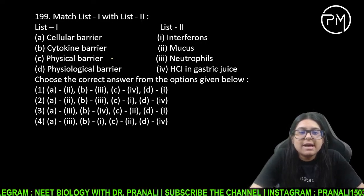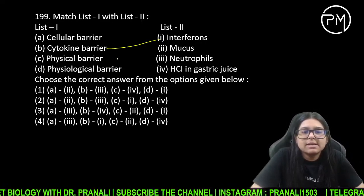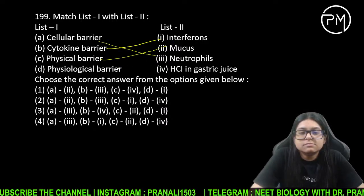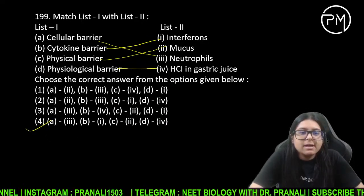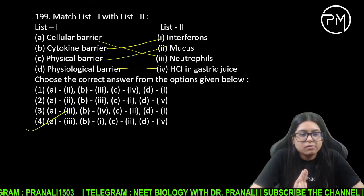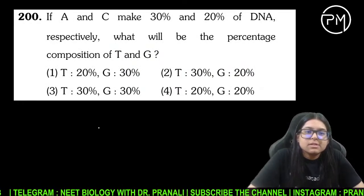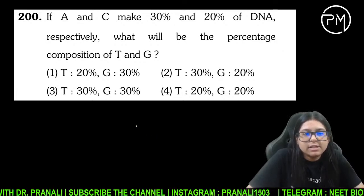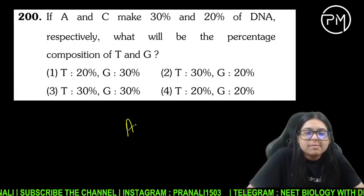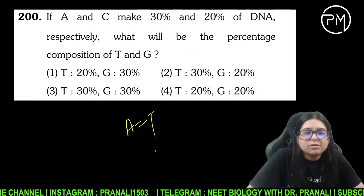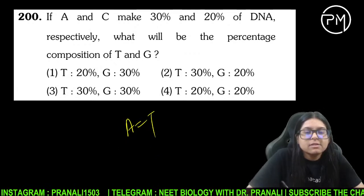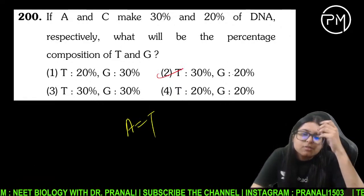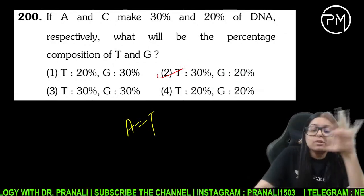Kaun sa kis barrier ka example hai? Cellular barrier — neutrophil. Cytokine interferons. A aur C make 30% and 20% of DNA. A kiske barabar hota hai — T ke barabar. A 30% toh T 30%, aur G hamesha C ke barabar. 200 ka answer 2 ho jayega.